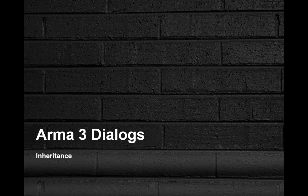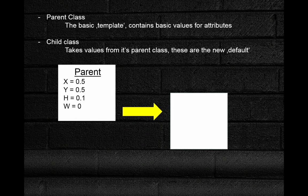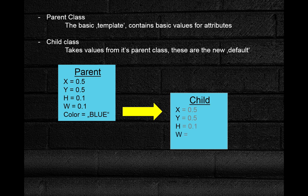We'll only be using one concept from inheritance, but we will need to introduce a few basic names. When we inherit something from a class, it means that the characteristics of that class are passed to the other class that inherits the data. Let's call this a child class and the one we take data from a parent class. By passing all the data to the child class we can save ourselves some time and create multiple controls of the same type very quickly.